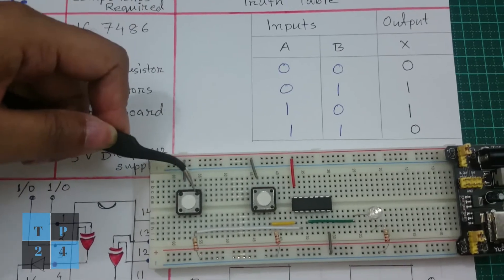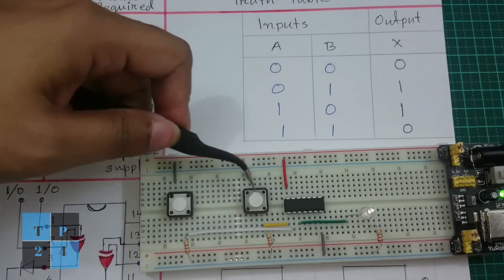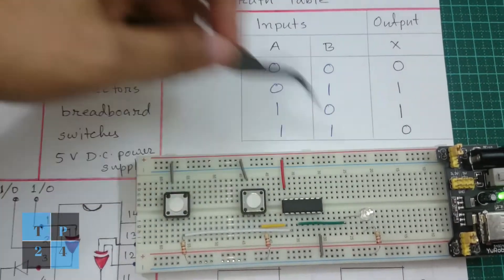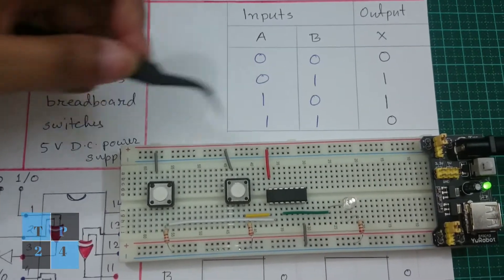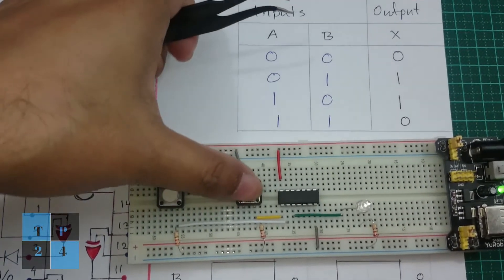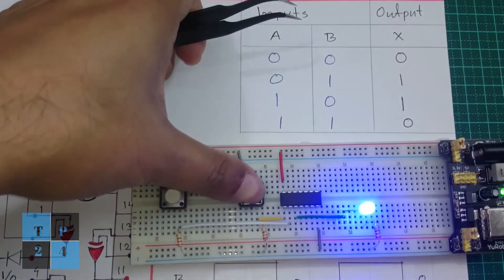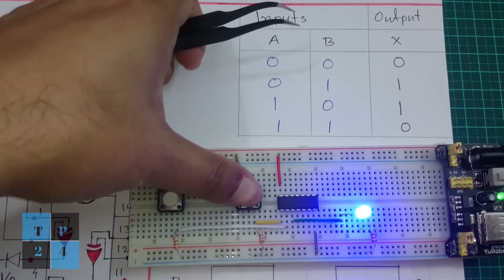If input A is 0 and B is 1, if I press the button then the LED is blinking, that means output is 1.